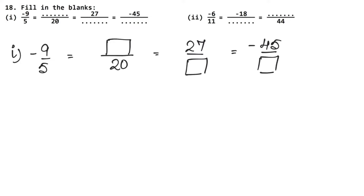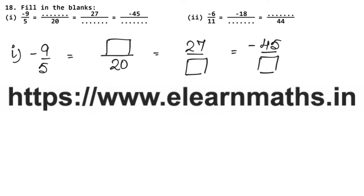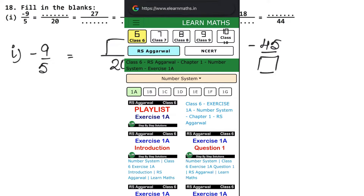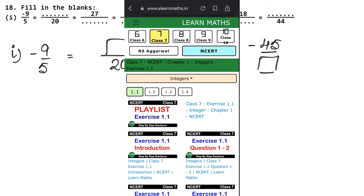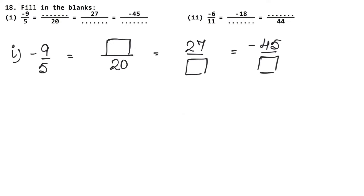Now see how we will do this. If you see 5 to 20, all these fractions are equal. If you haven't seen this exercise, please check it — the link is in the description box, or go to my website www.elearnmass.in and click class, click book, and you can see any chapter. In this exercise, I taught you to make equivalent fractions. In question number 7, you must see it — there is an equal sign.